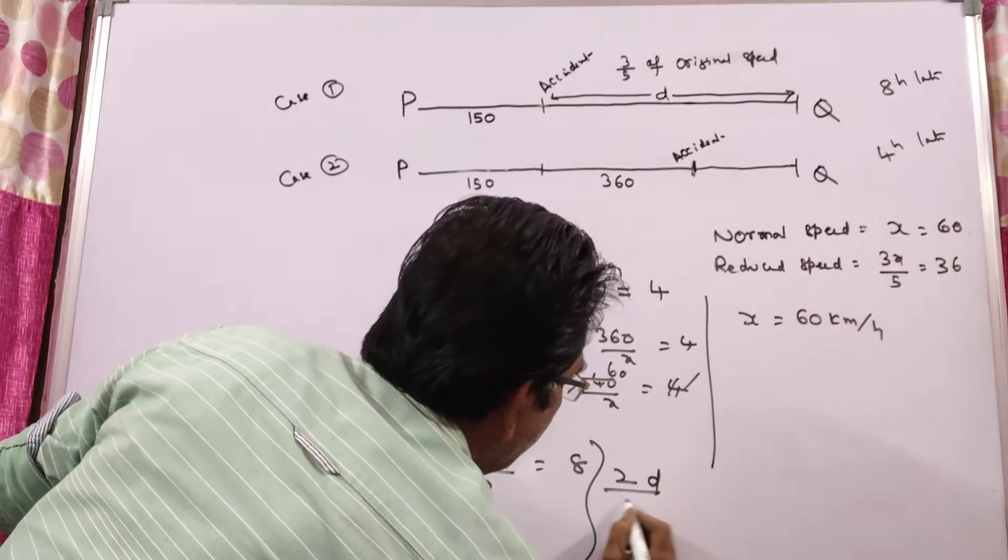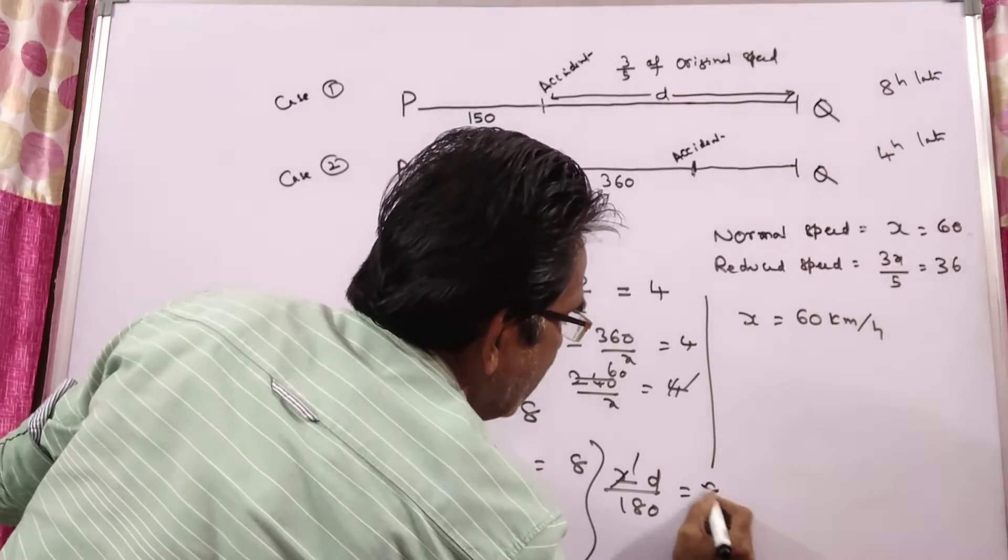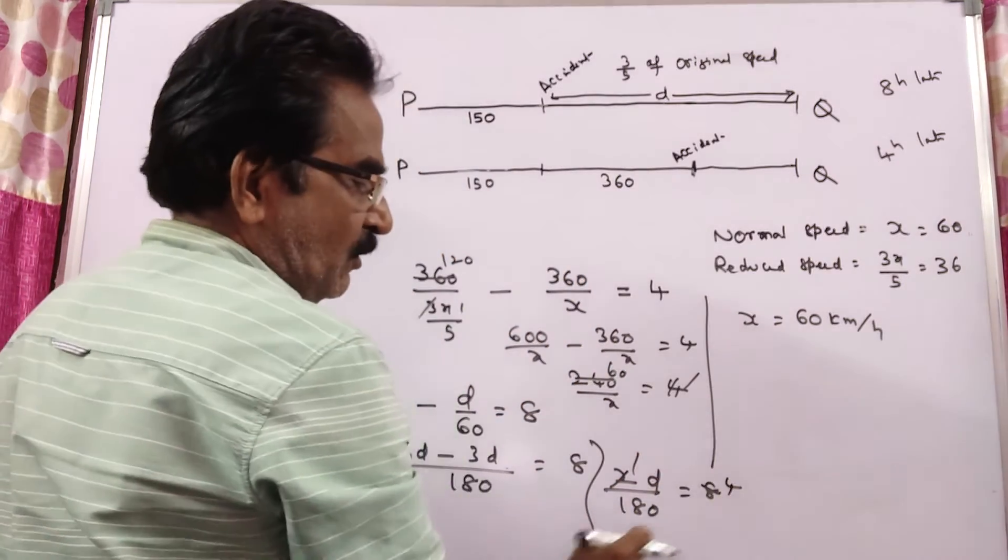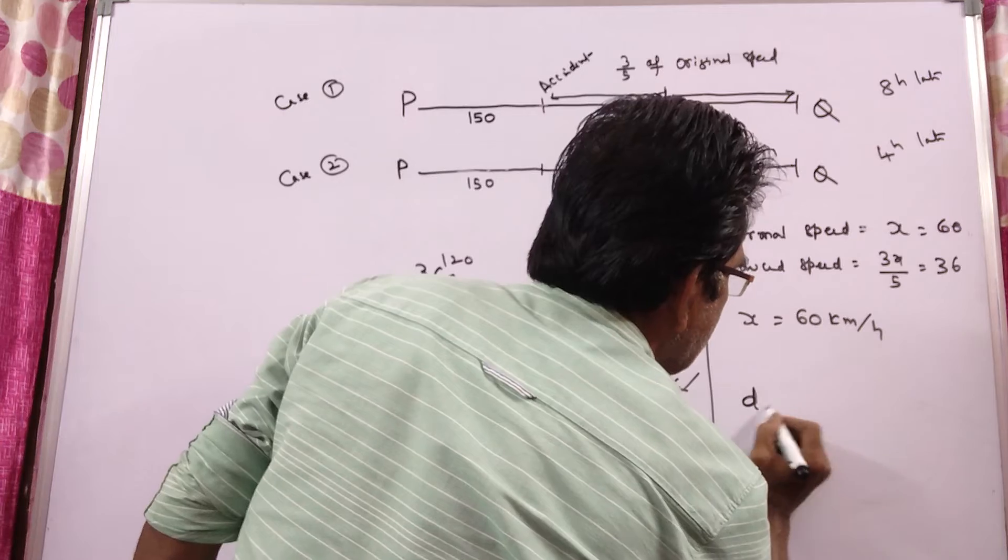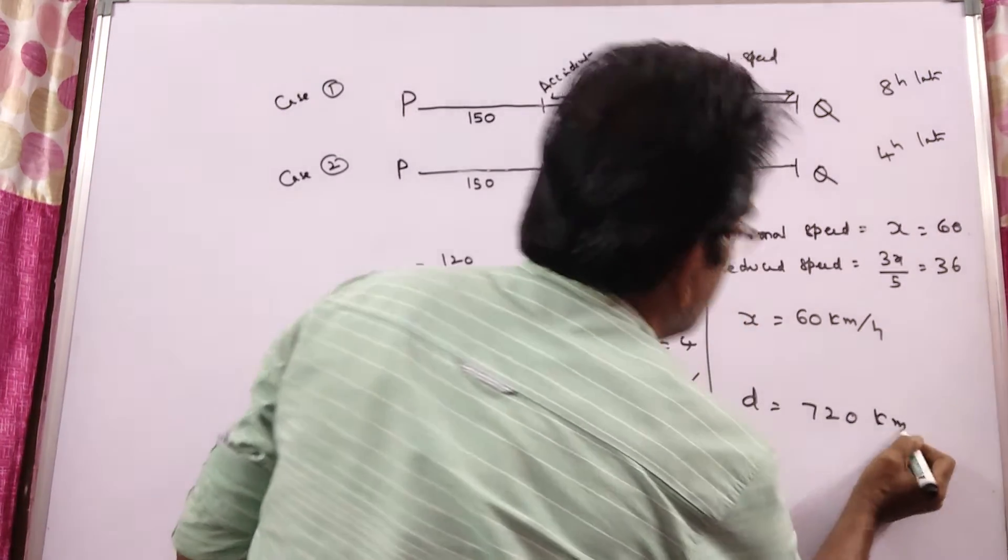2d by 180 is equal to 8, 2 into 4. D is equal to 180 into 4, D is equal to 180 into 4, 720 kilometers.